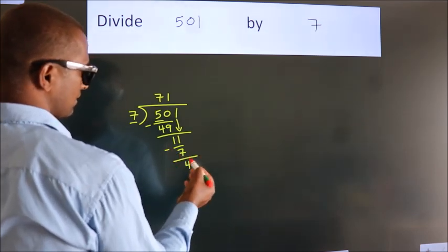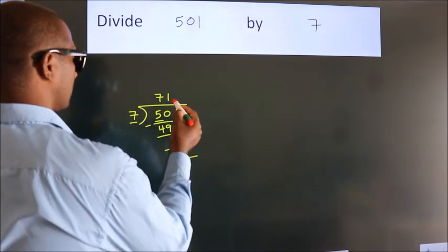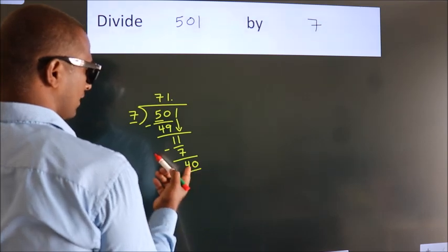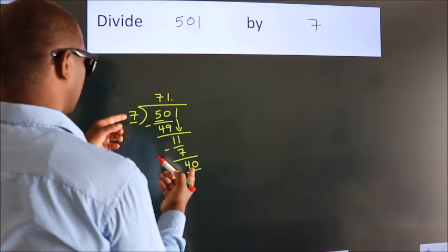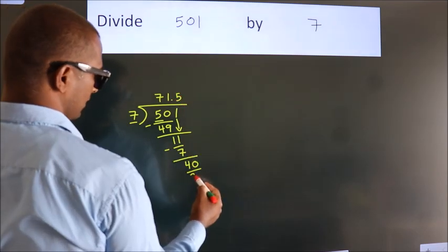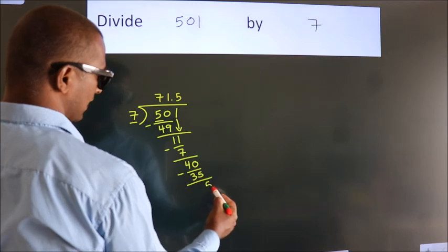After this, no more numbers to bring down. So what we do is we put a dot and take 0. So 40. A number close to 40 in the 7 table is 7 fives, 35. Now we subtract. We get 5.